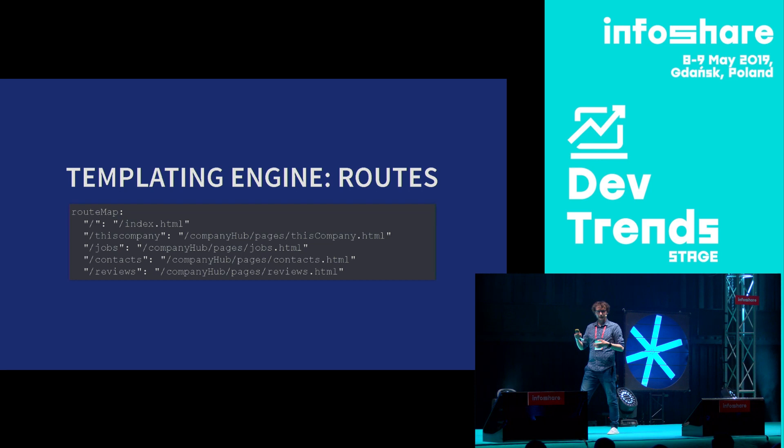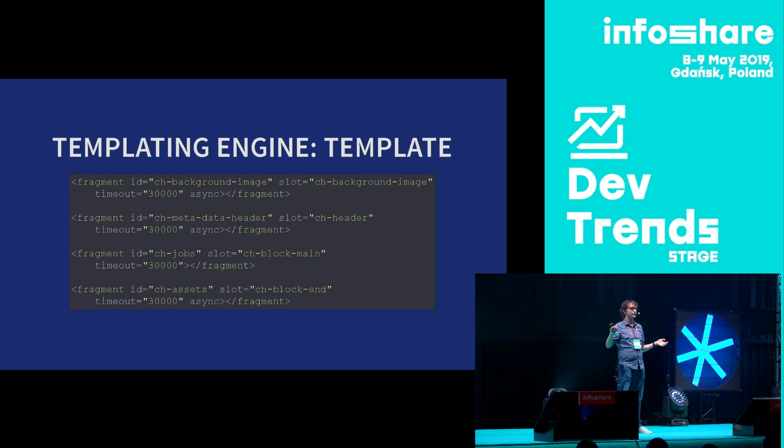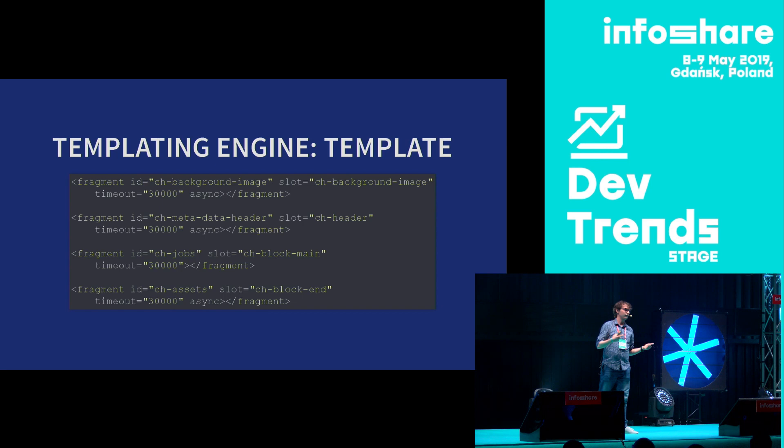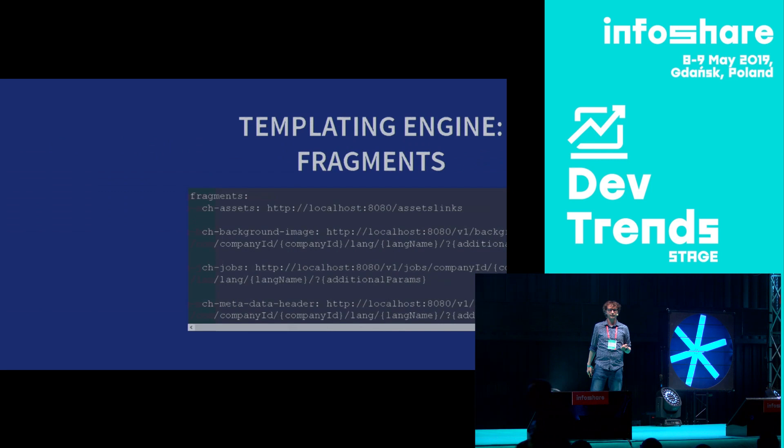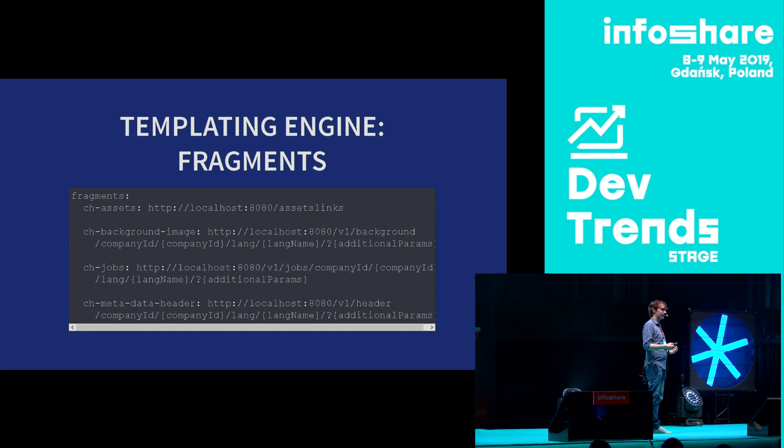This is an example of the implementation of route-to-template mapping in our templating engine. As you can see, whenever the templating engine receives a request that matches one of those routes, it will render a corresponding template. Here is an example of a template — most of the time it's just a collection and composition of different fragments. Each fragment has its own small configuration, and most importantly, each one has its own unique ID. Here is a map between IDs and actual locations of those micro-frontends, so the templating engine, when rendering a given template, will replace each fragment with content from the specific micro-frontend.